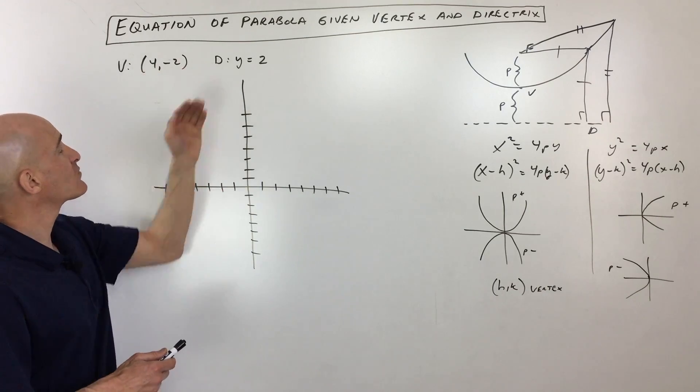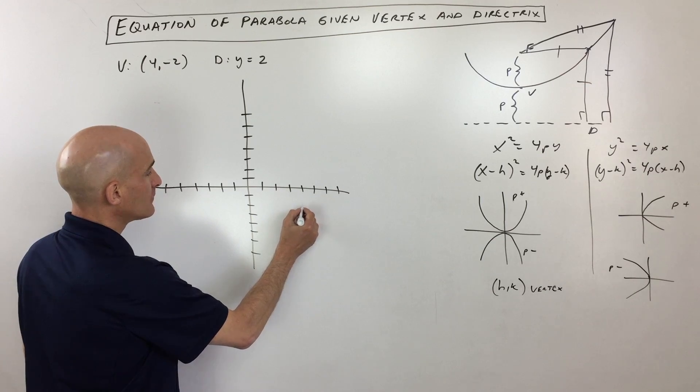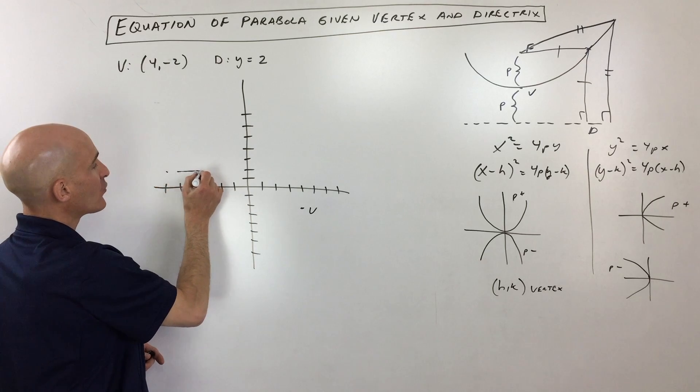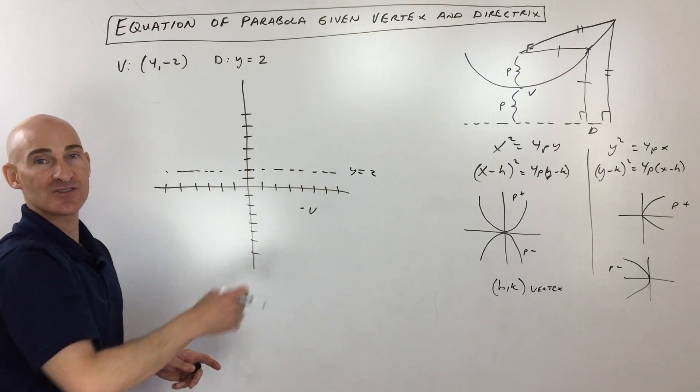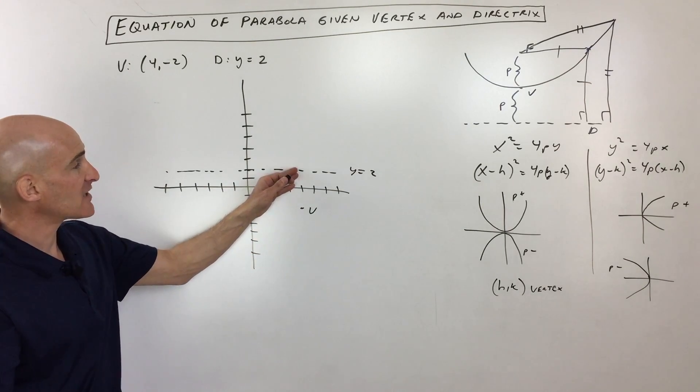Let's go through this problem now. The vertex is 4 negative 2. So you're going right 4 down 2. So that's the vertex right there. And the directrix is y equals 2. Now remember y equals lines, those are horizontal lines.